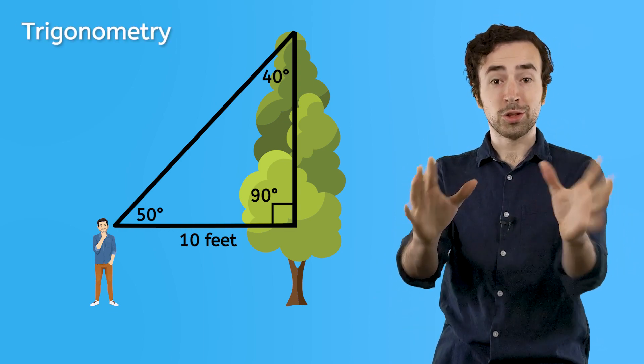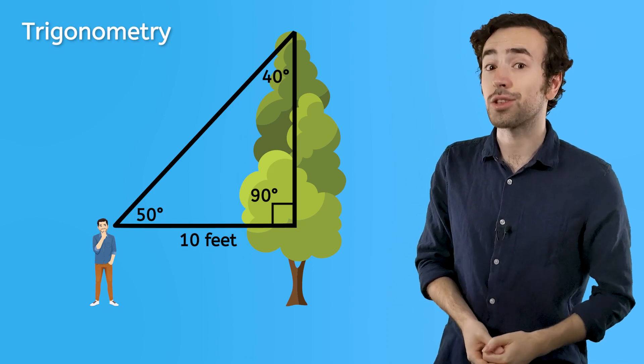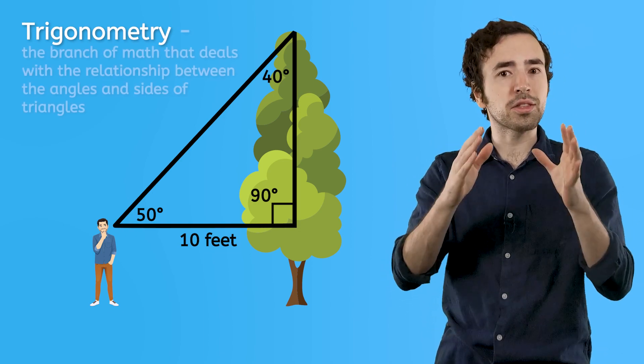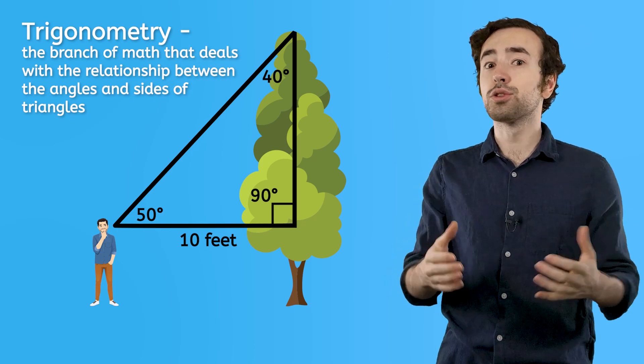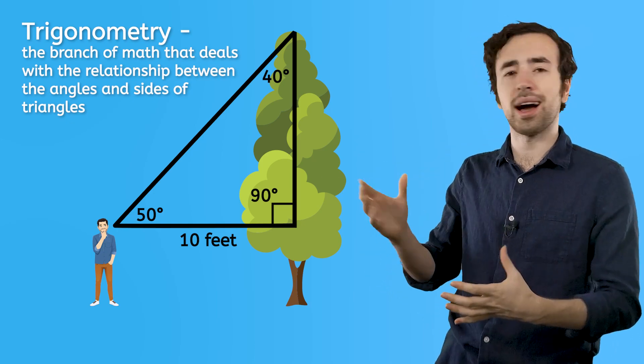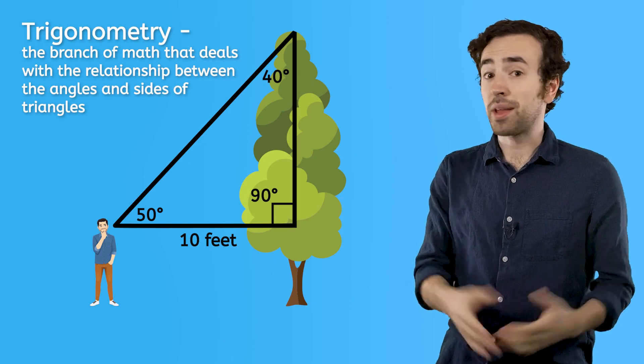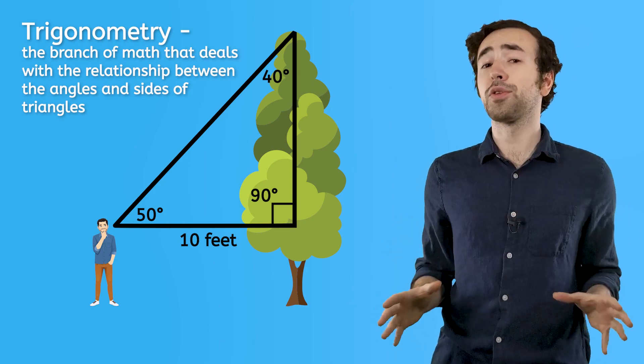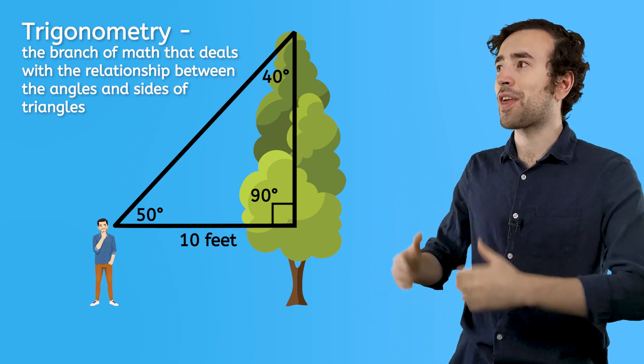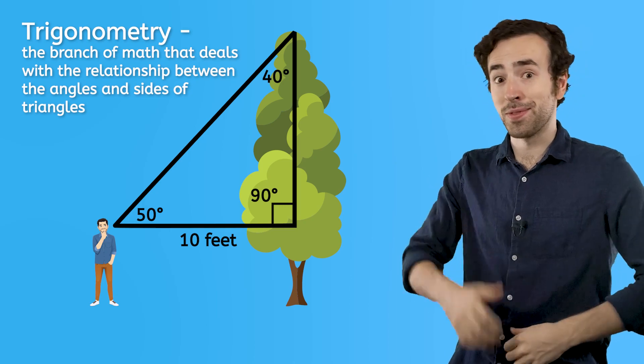Trigonometry. Trigonometry happens to be our next unit in geometry. And it's the branch of math that deals with the relationship between the angles and sides of a triangle. By the end of this unit, we will have everything we need to figure out the height of my parents' tree in this triangle.